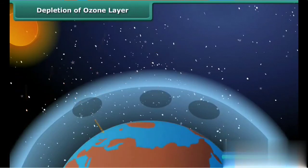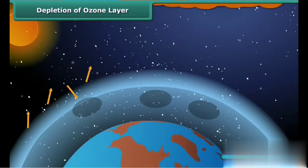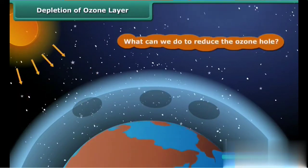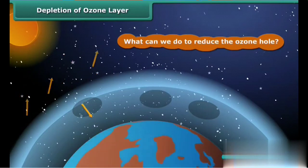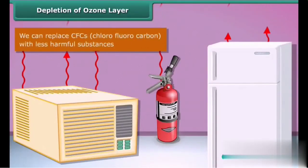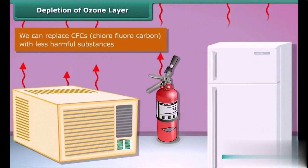CFCs are another type of air pollutant. What can we do to reduce ozone depletion? We can replace CFCs with less harmful substances to save the ozone layer from depletion.